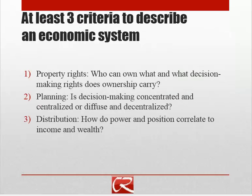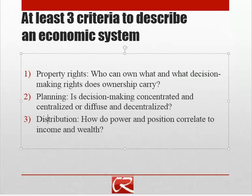We've covered essentially two of the criteria on this slide: property rights was the vertical axis in the last diagram, and planning was the horizontal axis. But we didn't touch on the idea of distribution. We could have a publicly owned economy where all the public resources are used to benefit the political elite — essentially a redistribution upwards, where position and power are used to increase income and wealth further. Or we could have a publicly owned economy where the government redistributes resources down towards people who are less powerful. The issue of distribution is distinct from planning and property rights.